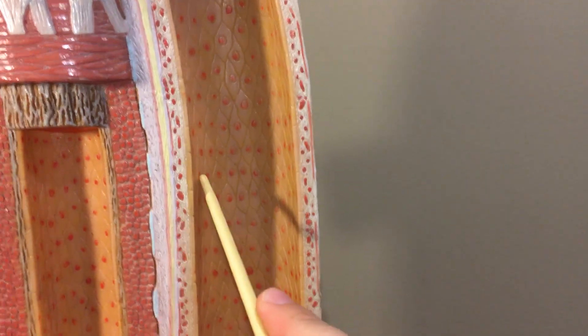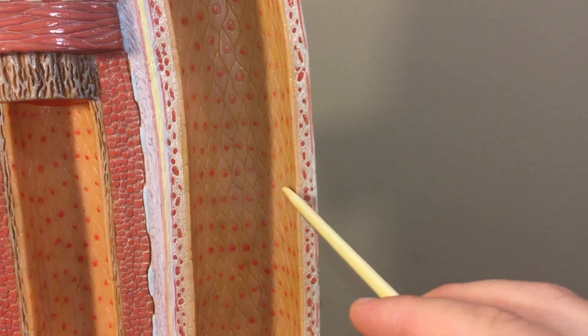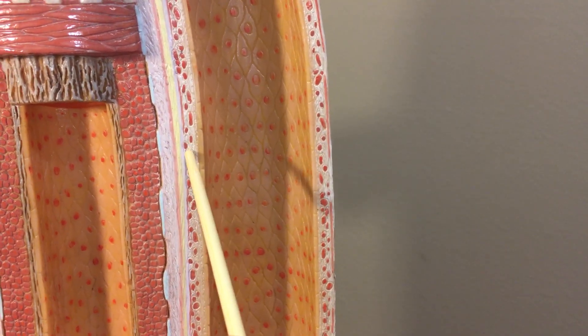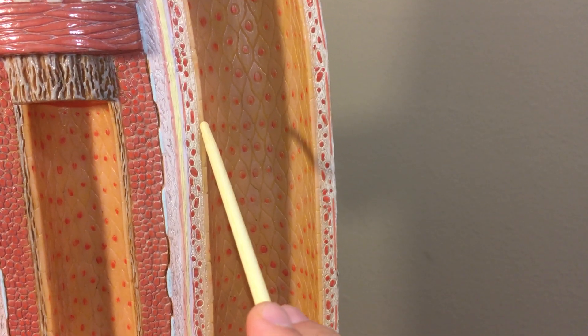Now if we were to compare that over to the lumen of the vein, it's very large. There's much less tissue to deal with. We're seeing the endothelium. That's the only thing that consists of the tunica interna.